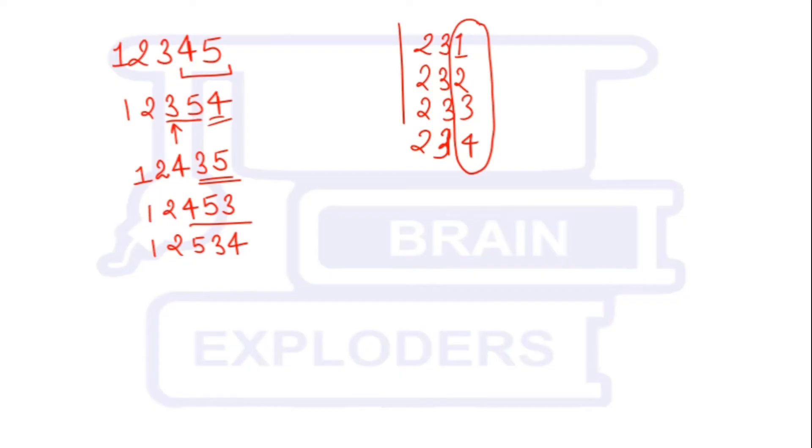Now you can see that when we write all the permutations of any number, then at last, all its digits, the last number, in the last number all its digits come in descending order from left to right. So we will keep that in mind.